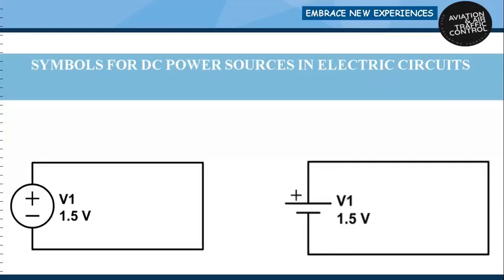Batteries are represented as a circle with a positive and negative symbol indicating the positive and negative terminals. Sometimes, to identify the polarity of terminals, a long thin line is used to represent the positive terminal and a short thick line to represent the negative terminal. This symbol indicates a generic DC power supply of 1.5 volts. The plus symbol at the top indicates that current flows out of the top side, and the negative symbol at the bottom indicates that current flows into the bottom side.